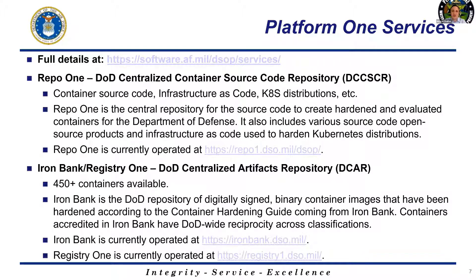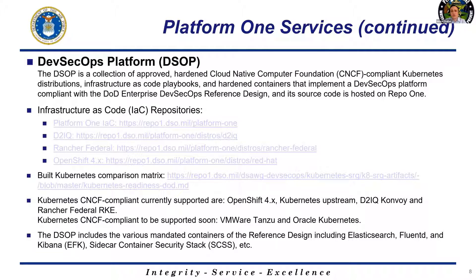We created a bunch of services, some open source to the world. Repo1 is our source code repository where we put all the container source code, Terraform code, and all the Kubernetes distributions we hardened — you can check it out at repo1.dso.mil. We also have IronBank and Registry1, our container registry with 450-plus containers, centrally rebuilt, signed, and scanned with three scanners, providing a body of evidence of all CVEs and mitigations. Those are accessible at ironbank.dso.mil and registry1.dso.mil, all open sourced as well.